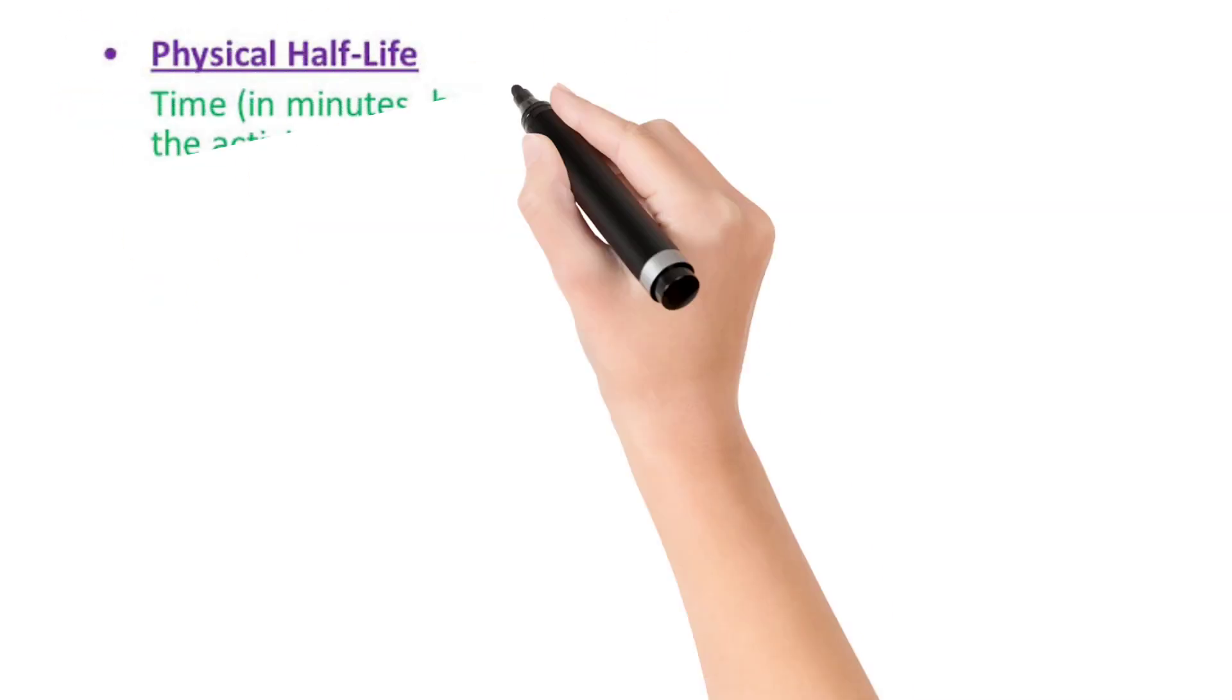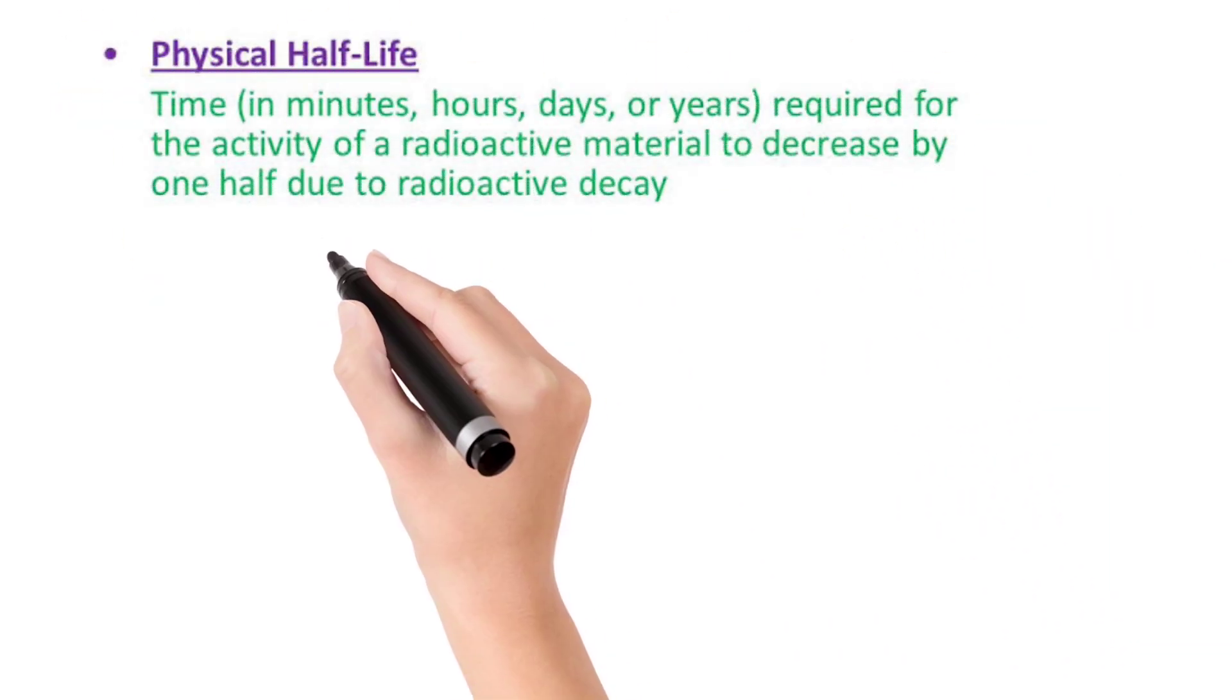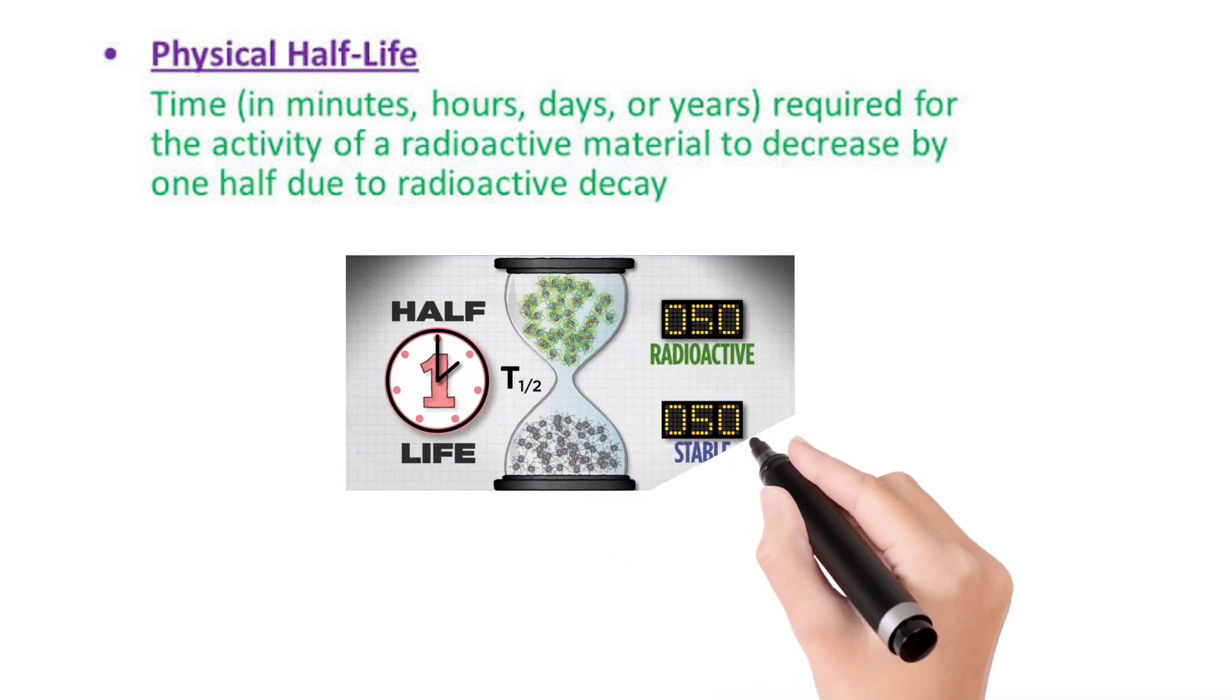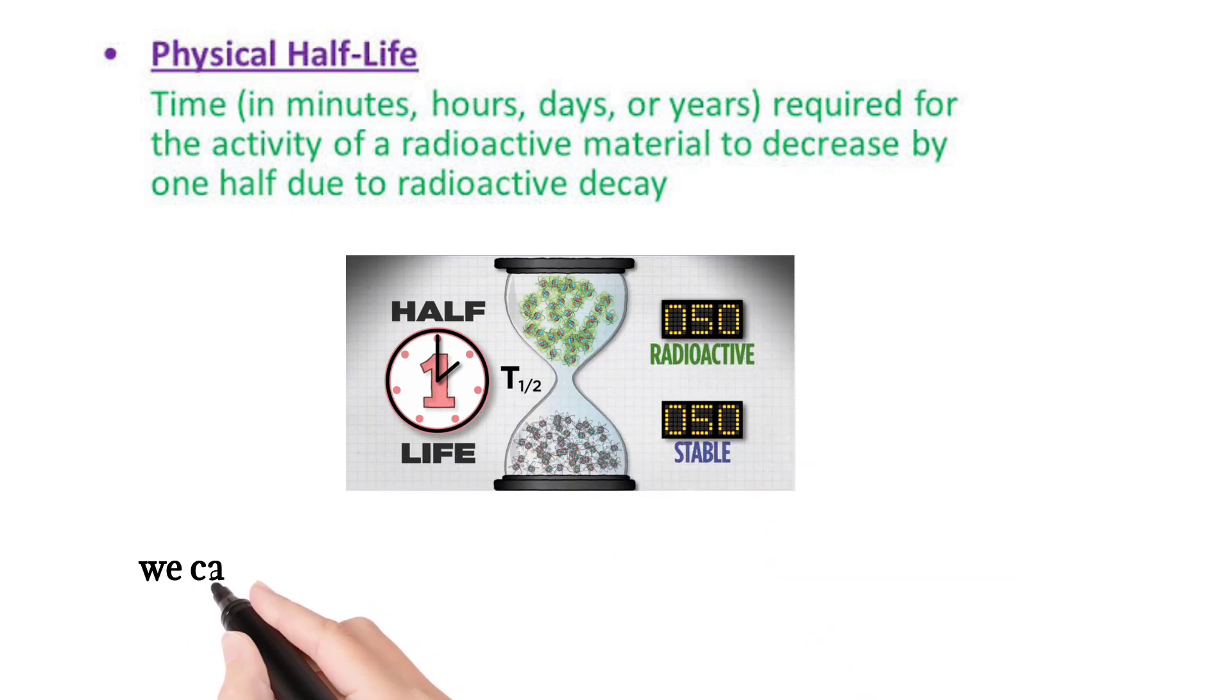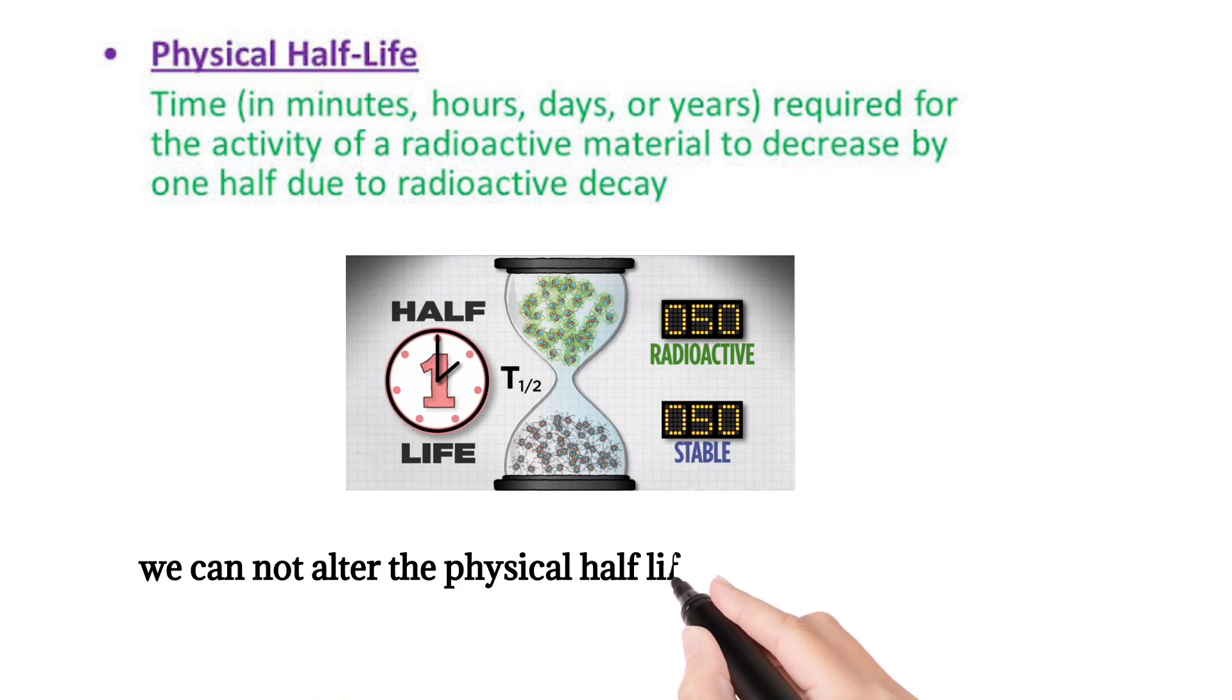Physical half-life is the time required for the activity of radioactive material to decrease to half of its original value. We cannot alter the physical half-life, which is a characteristic of a given radionuclide.